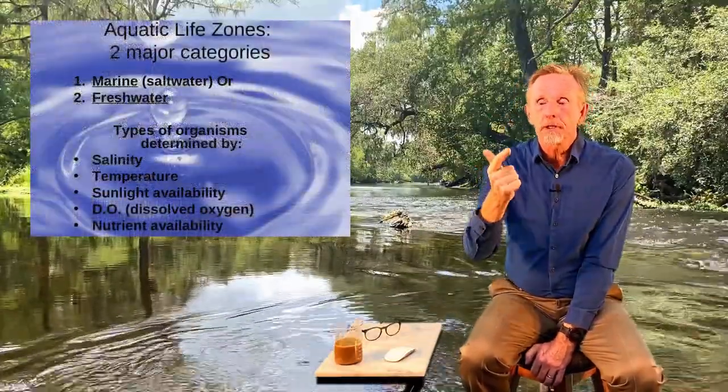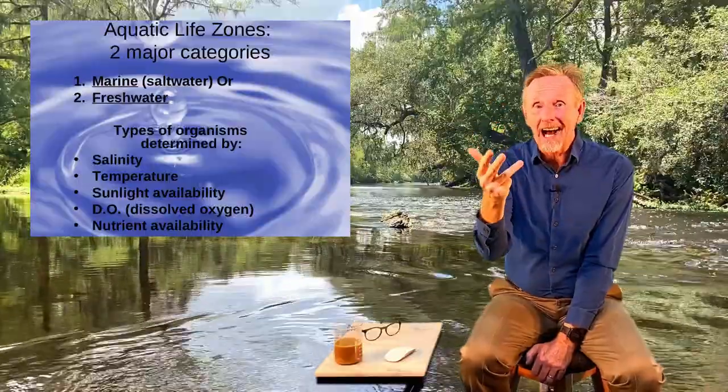So our four broad organism categories are plankton, nekton, benthos, and decomposers. Recall the key factors: sunshine, temperature, availability of food, and oxygen content. As a general rule, the shallower and warmer the water, the more organisms live there; the deeper and colder, the fewer organisms, because there's less oxygen and fewer nutrients.